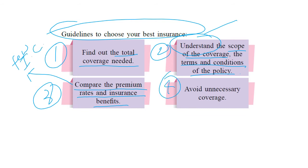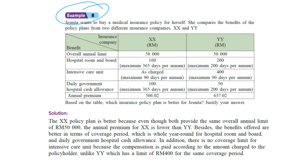Number four, avoid unnecessary coverage. Sometimes they will add on extra coverage you may not need, so you have to really check that. For example, Jesnita wants to buy a medical insurance policy for herself, so she compares the benefits of two different policies: XX and YY.